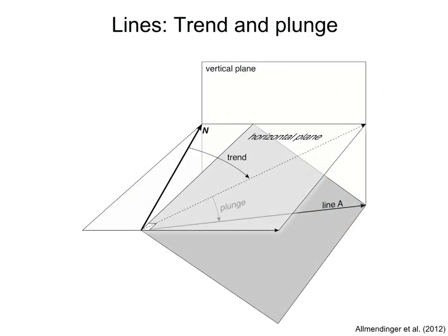Let's look at the orientation of lines. For determining the orientation of a line such as line A in the figure, we measure two angles: trend and plunge. Trend is the angle that the horizontal projection of the line, the blue line in the figure, makes with the north — it is an azimuth angle between 0 and 360 degrees. Plunge is the angle that the line makes with its horizontal projection, measured on a vertical plane containing the line. It is an angle between -90 and 90 degrees: a line with plunge -90 points upwards, plunge 0 is horizontal, and plunge 90 points downwards.